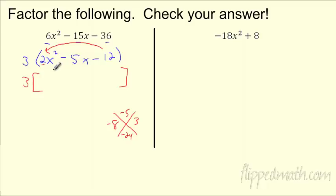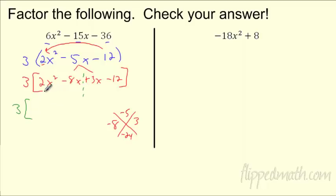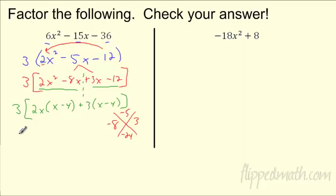We're going to do this by grouping. We break this down as 2x squared minus 8x plus 3x minus 12 — rewriting the minus 5x as minus 8x plus 3x. That 3 is still part of your answer. Looking at the first group, what comes out? I can take out a 2x, and what's left is x minus 4. Then looking at the second group, take out a 3, and what's left is x minus 4. I know I'm in good shape because these match. So now I can put this together — 3 times the quantity 2x plus 3 times x minus 4.